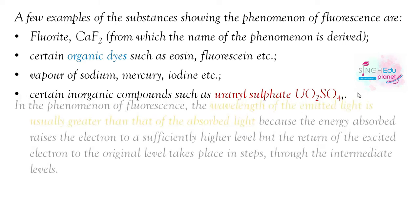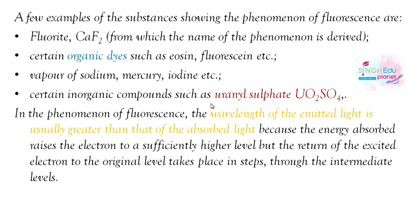In fluorescence, we observe that the wavelength of emitted light is greater than the absorbed light. The emitted wavelength is greater than the absorbed wavelength because the energy emitted raises electrons to a higher level. But when we return to the lower level, it takes several steps through intermediate levels. This is why the wavelength of emitted light is greater than the absorbed light.